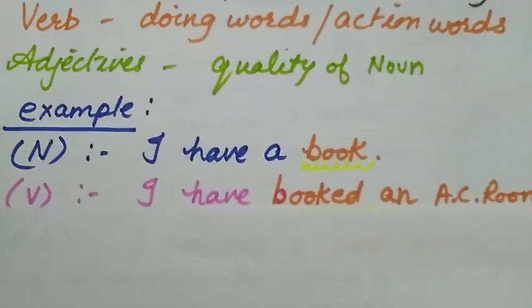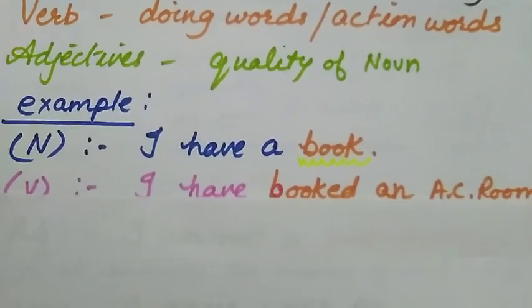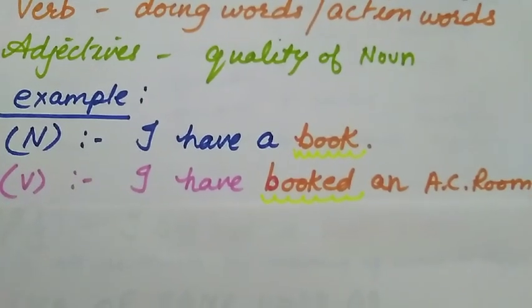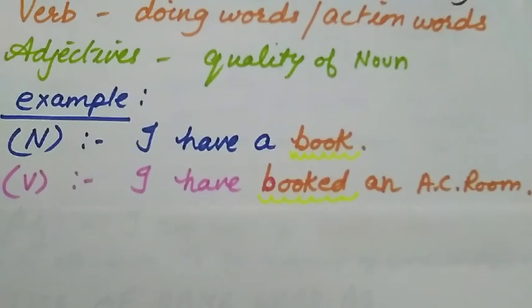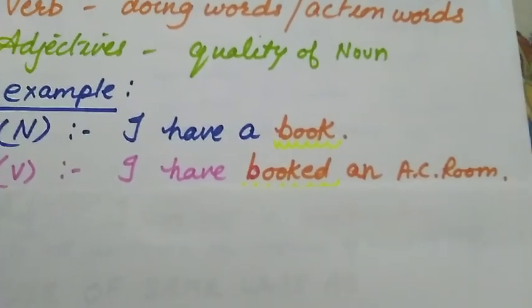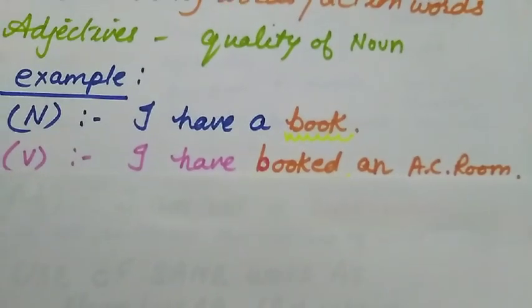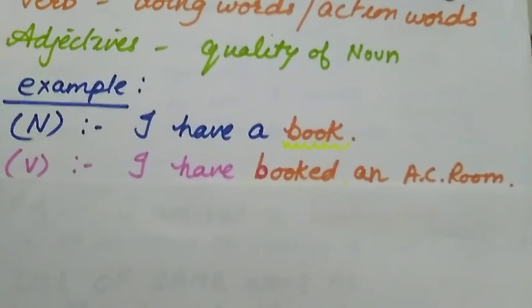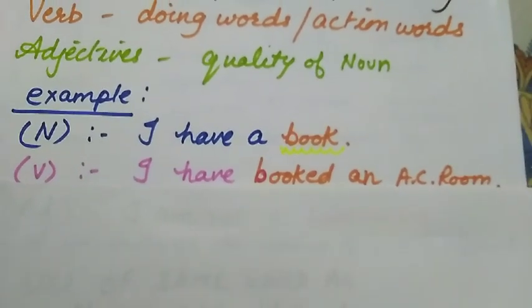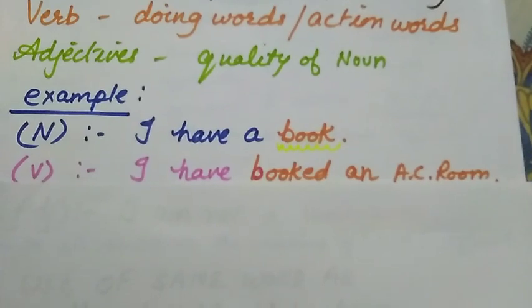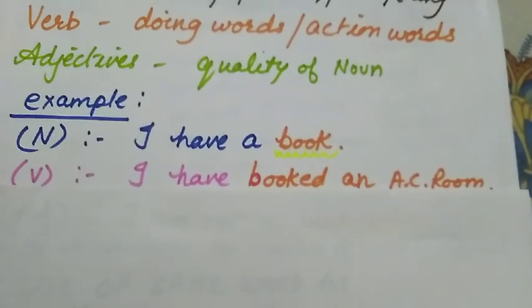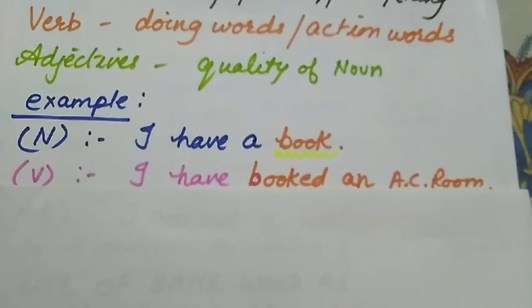If you have to make a sentence where we use this word as a verb, then: I have booked an AC room. Here 'booked' is used as a verb. The meaning is completely different - 'book karna' means to reserve something.